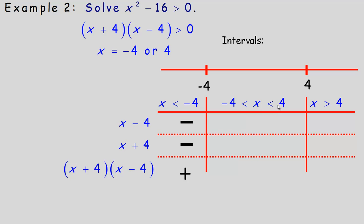Now we test between negative 4 and 4. Using x equals 0: 0 minus 4 is negative, but 0 plus 4 is positive. So we have one negative and one positive, and the product of a negative and a positive is negative.